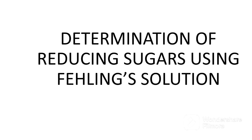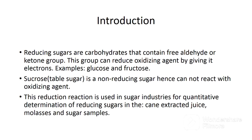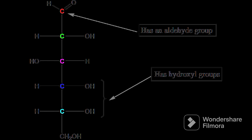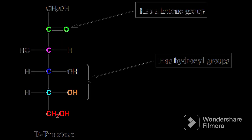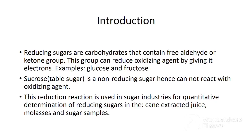Reducing sugars are carbohydrates that contain a free aldehyde or ketone group. This aldehyde or ketone group can reduce an oxidizing agent like copper sulfate by giving it electrons. Examples of reducing sugars are glucose and fructose.